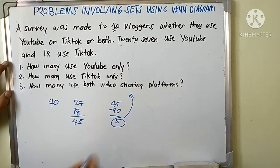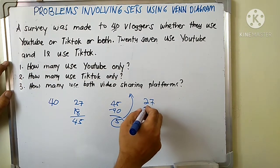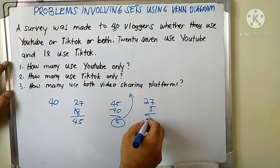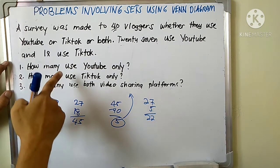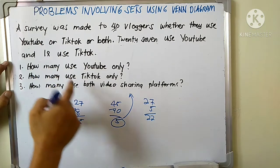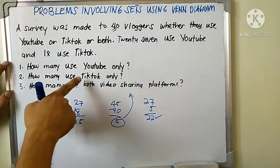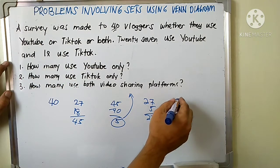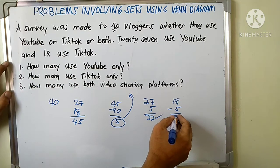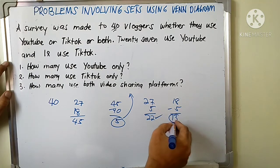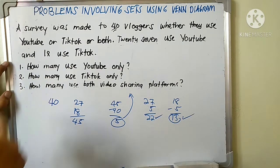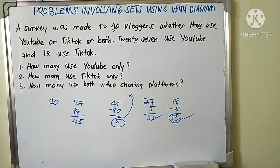Then we go back: 27 minus 5 equals 22 for those who use YouTube only. For TikTok only, 18 minus 5 equals 13. You're done — you have answered all three questions using analysis.